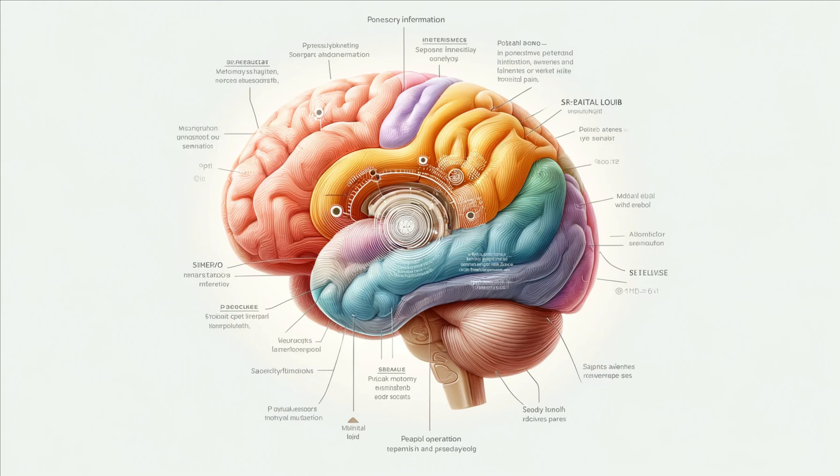The parietal lobe, situated behind the frontal lobe, processes sensory information like touch, temperature, and pain. It helps you understand spatial orientation and body awareness.